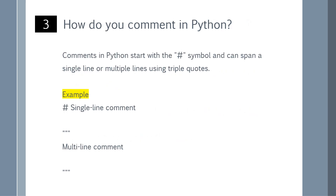How do you comment in Python? Comments in Python start with the hash symbol and can span a single line or multiple lines using triple quotes. Let's have a look at the example shown on the screen.